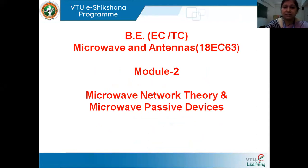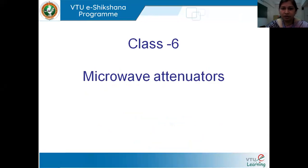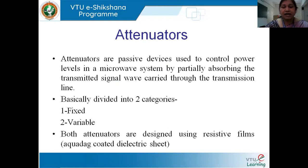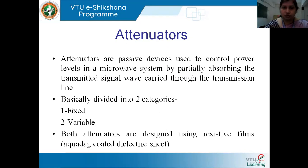In the previous classes, we have already finished microwave network theory. Now in the sixth class, we are going to do microwave attenuators. We know what an amplifier is and what an attenuator is. When we talk about an attenuator, the signal strength — or rather the amplitude of the signal — is going to be reduced.